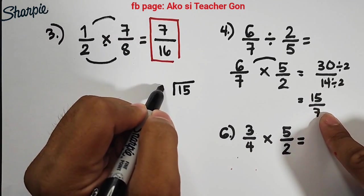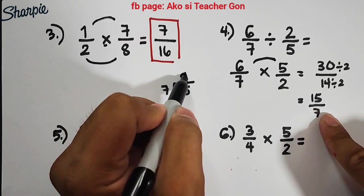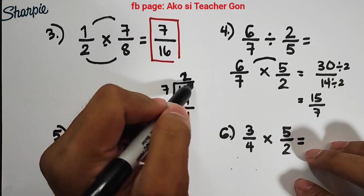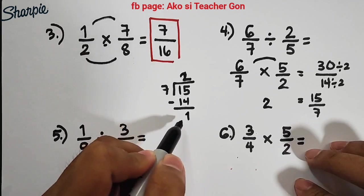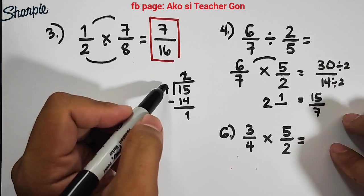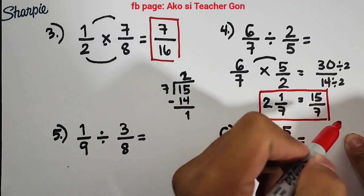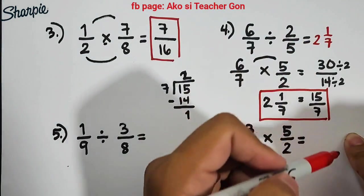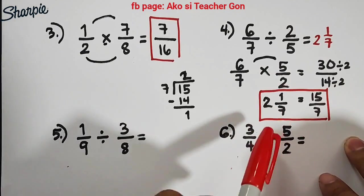By the way guys, we can also convert this into mixed numbers. How do we do that? 15 divided by 7 is 2. 2 times 7 is 14, and then you subtract, we have 1. So the quotient is 2, that will serve as your whole number for the mixed number. This is your remainder, 1, you put it in your numerator, and for the denominator you copy the original denominator of your 15/7. That's why the correct answer here is 2 and 1/7 or 15/7. Either of the two is acceptable, but I will just write 2 and 1/7. Both are accepted because they are equal. Some teachers don't ask students to convert to mixed number, so that's also fine.